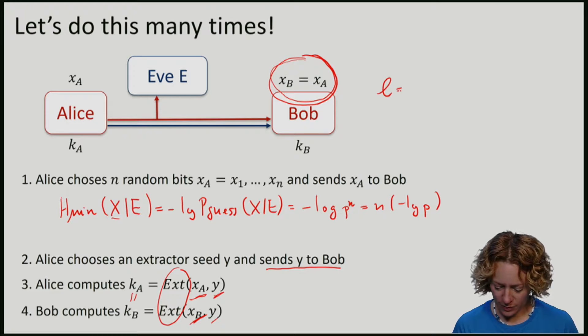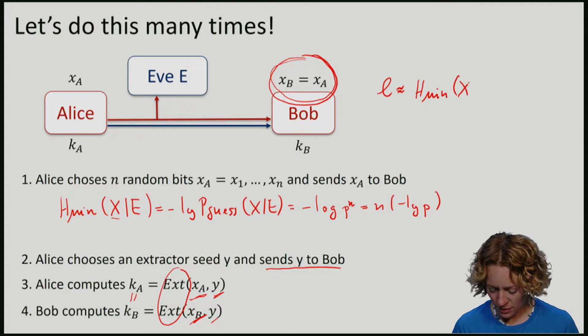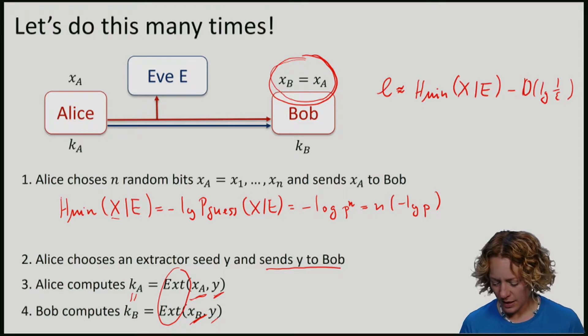The number of bits is roughly the same as the min entropy of x given e, minus order log 1 over epsilon, if we want our key to be epsilon secure.